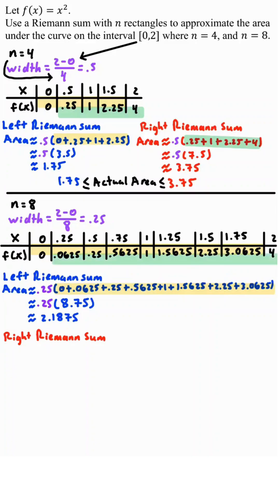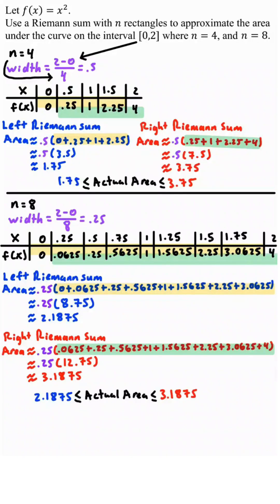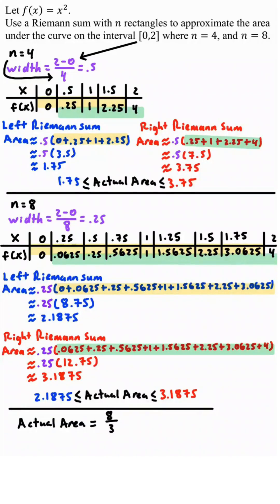For the right Riemann sum, we're going to use the eight right f of x values. So the area is about 0.25 times the sum of these eight values. Simplify this, you get about 3.1875. Combining these two, the actual area is between 2.1875 and 3.1875. To get a more accurate answer, use more rectangles. For reference, the actual area is 8 over 3, which is about 2.667.